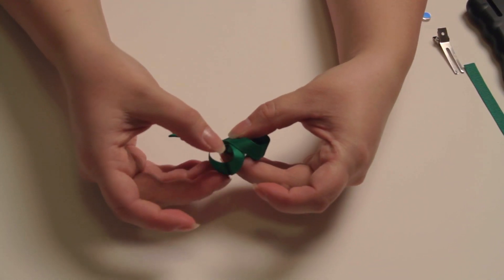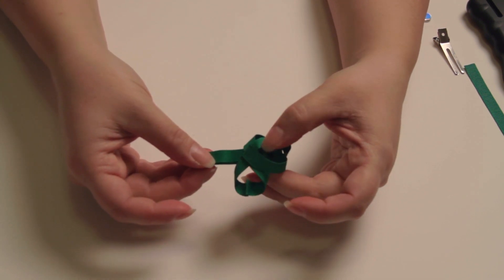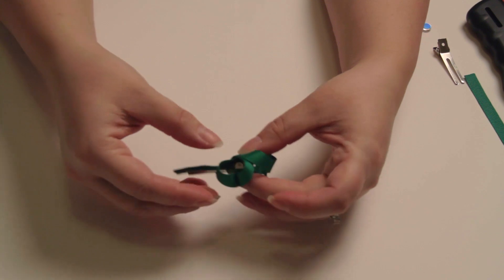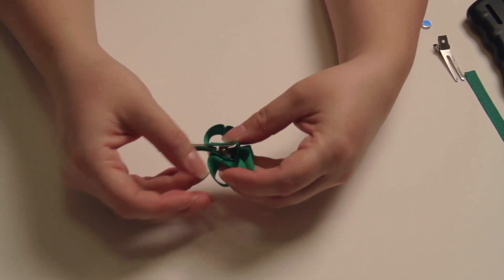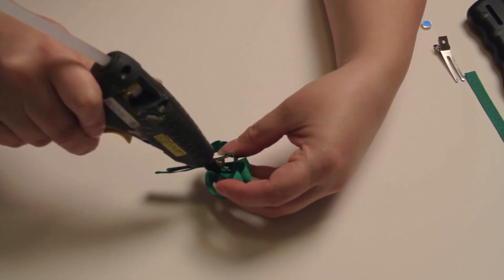These have a tendency to unfold and not hold their form. So what I'm going to do is turn it around and right here I'm going to put a small dot of glue.